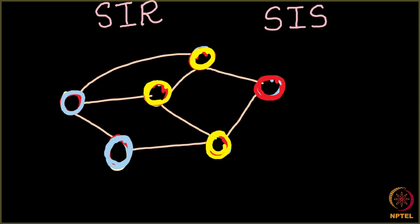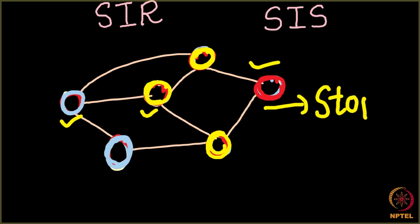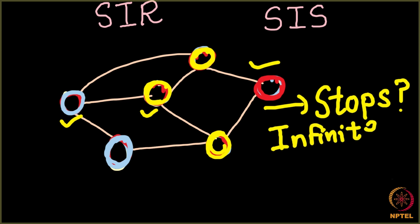The question is: this process where nodes are changing their color — somebody getting infected, somebody getting susceptible, somebody getting recovered — do you think this process stops after some time, or does it keep running for an infinite period of time? You might want to pause the video for two minutes and think about it.